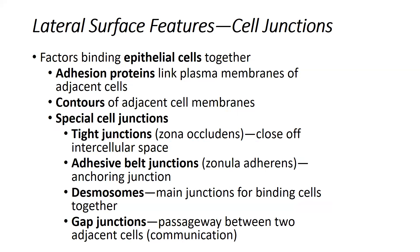There are four types of specialized cell junctions. Tight junctions, also called zona occludens, help to close off the intercellular spaces. This means that the spaces between one cell and another that would typically allow the movement of substances from the lumen down into the basement membrane are closed off, so that there is no movement of substances between cells — all movement takes place through the cell itself.